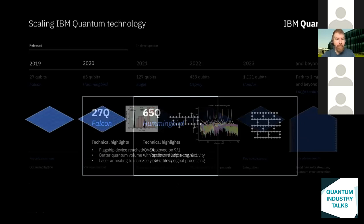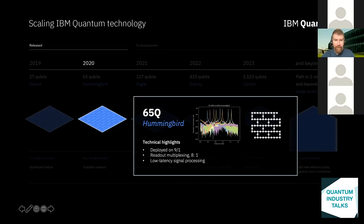The more recent 65-qubit Hummingbird, released a couple of months ago, is a similar kind of lattice — essentially two of the previous ones put together — but with architectural advantages such as readout multiplexing, where we can take eight readout signals and combine them through the same amplifier using frequency multiplexing. When we have those frequency-multiplexed signals we can integrate and discriminate on hardware using programmable FPGAs, which really reduces the latency by figuring out measurements in hardware rather than software.